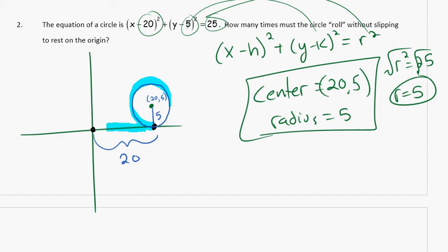So the circumference of this circle is 2πr, where r is 5, so the circumference is 10π, which is about 31.415.